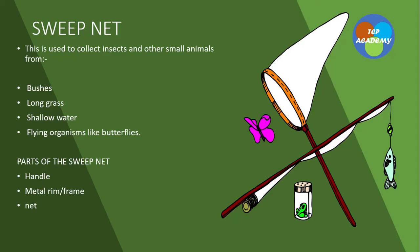The other thing we want to look at is the sweep net, and this is used to collect insects and other small animal forms. You might have seen the sweep net in use — it's used in bushes, long grass, and shallow water. It's also used to catch flying organisms like butterflies. It is used swiftly, sweeping it side to side as we walk through the habitat, and we collect organisms in the net, after which they are collected into a jar or bottle. I will enhance this video with another video showing the use of the sweep net.